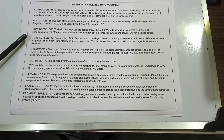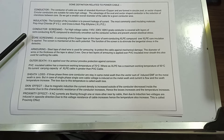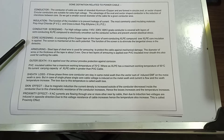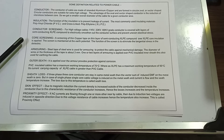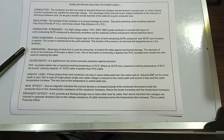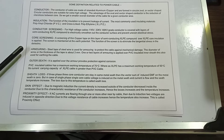Next: core screening. A screening of thin copper tape or a thin layer of semiconducting XLPE compound is applied over the XLPE core insulation. The screen is maintained at earth potential. The function of the screen is to eliminate tangential stress in the dielectric. Next: armoring. Steel tape or steel wire is used for armoring to protect the cable against mechanical damage.